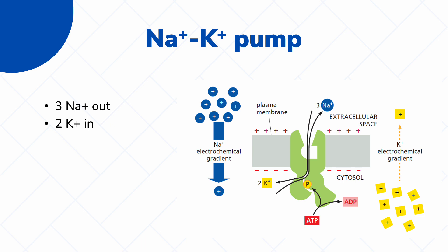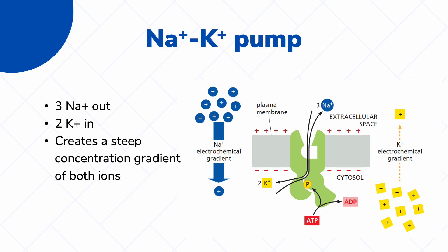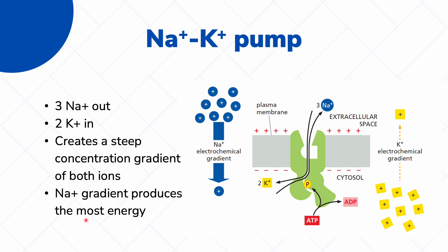At the same time, this pump is responsible for maintaining the different concentration gradients of our ions. As it pumps sodium outside the cell, this maintains the sodium electrochemical gradient, and as it pumps potassium back into the cell, this maintains the potassium electrochemical gradient. These two are very important for the cell to maintain, especially the sodium electrochemical gradient, because this is the gradient that produces the most energy for an animal cell.